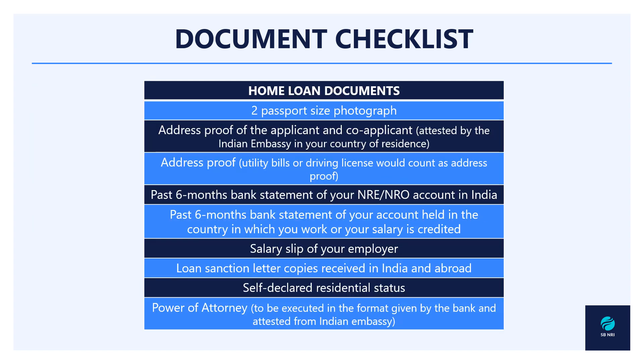If you are getting a home loan to buy the property, the documents required include two passport-size photographs, the address proof of the applicant and co-applicant attested by the Indian Embassy in your country of residence, the past six months' bank statement of your NRE/NRO account in India, the past six months' bank statement of your account in the country where you work or your salary is credited, salary slips from your employer, loan sanction letter copies received in India and abroad, a self-declared residential status, and the power of attorney in the format given by the bank, attested by the Indian Embassy.